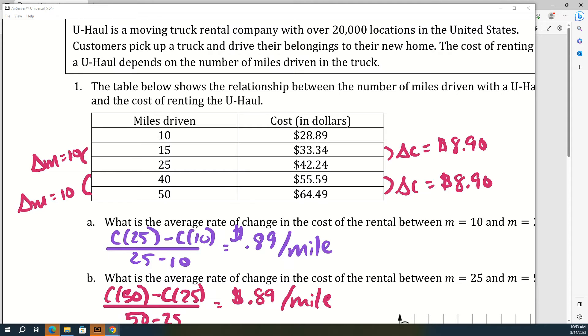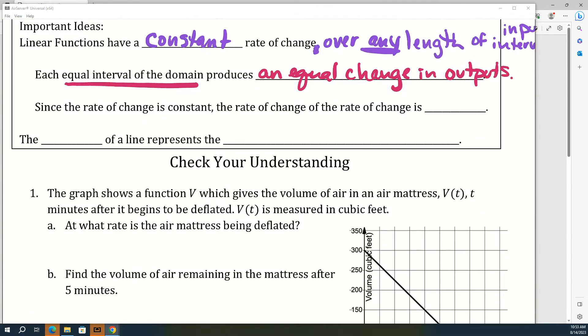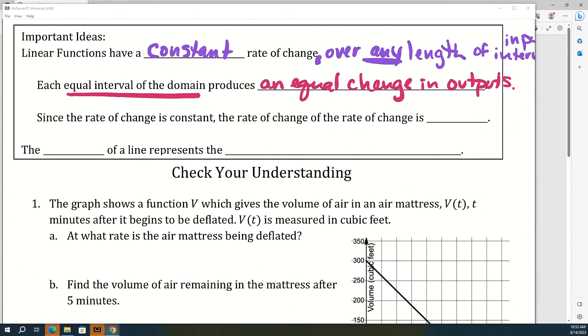Alright, and then also you guys kind of already figured out that since the rate of change is constant of a linear function, the rate of change of the rate of change is zero. And one more way to say kind of the same thing as we've been saying is that the slope of a line represents the constant rate of change.